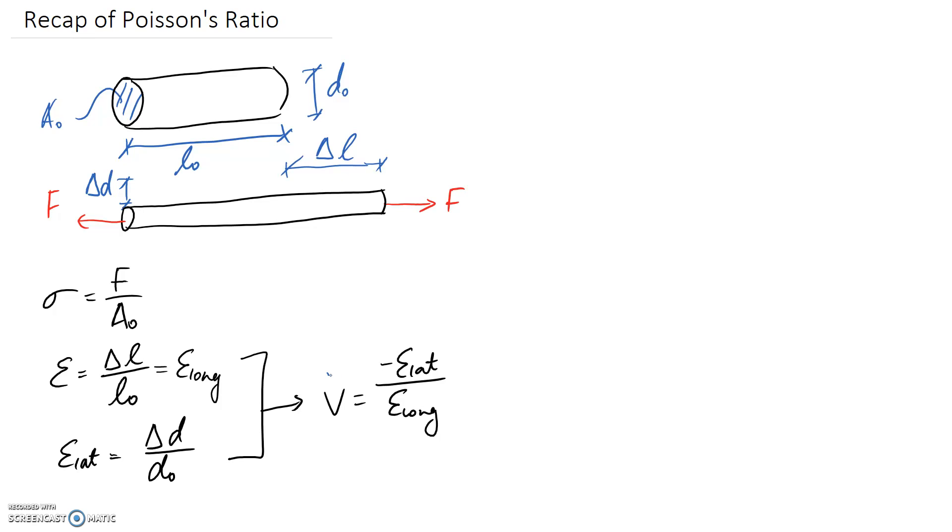So this here, it's the Greek letter nu, and it is the symbol used for Poisson's ratio. And really all it is, it's literally the ratio of how far a material is going to extend in one direction compared to how much it's going to contract in the other direction.